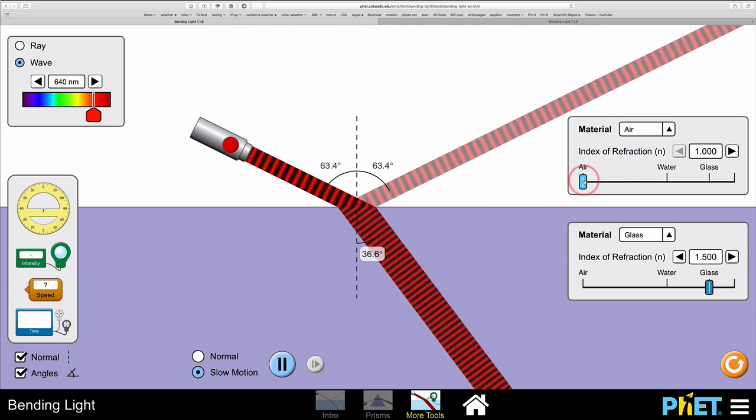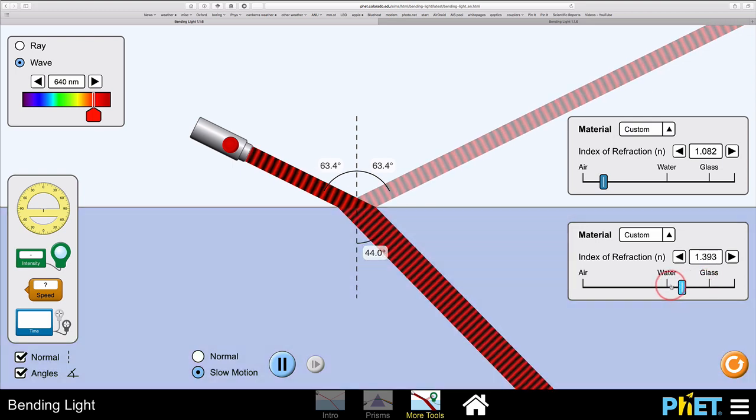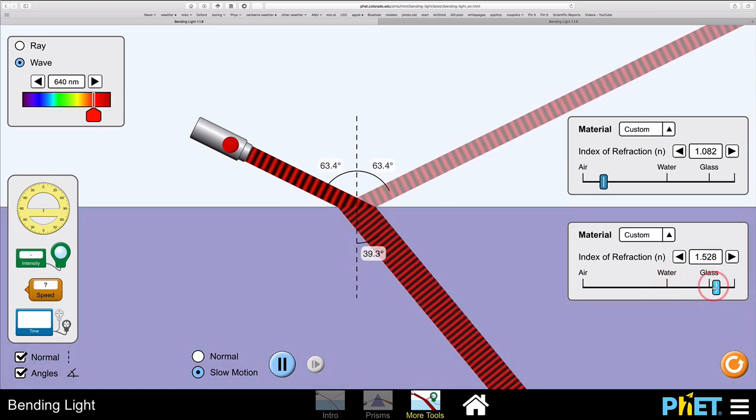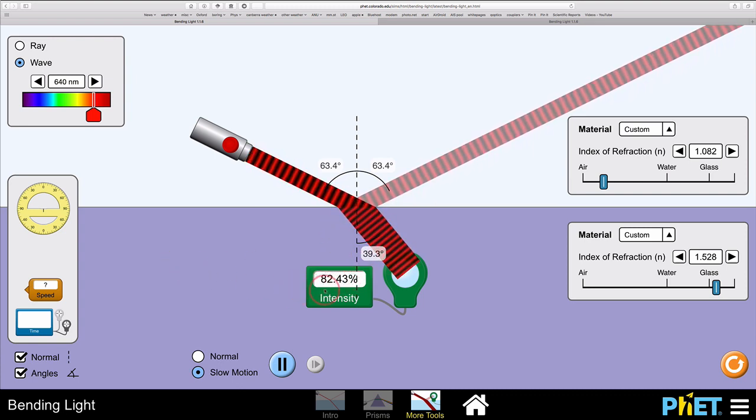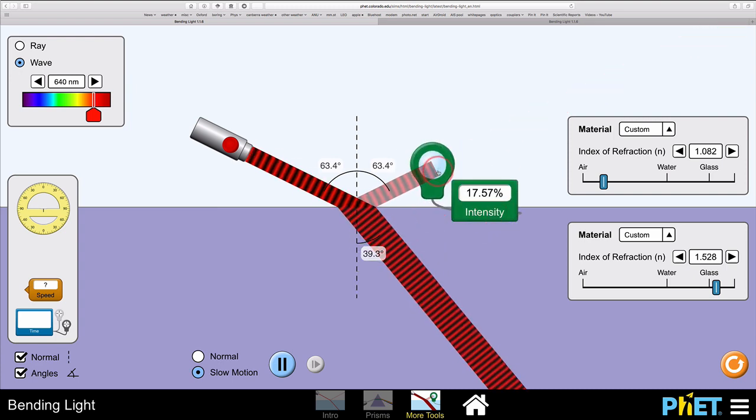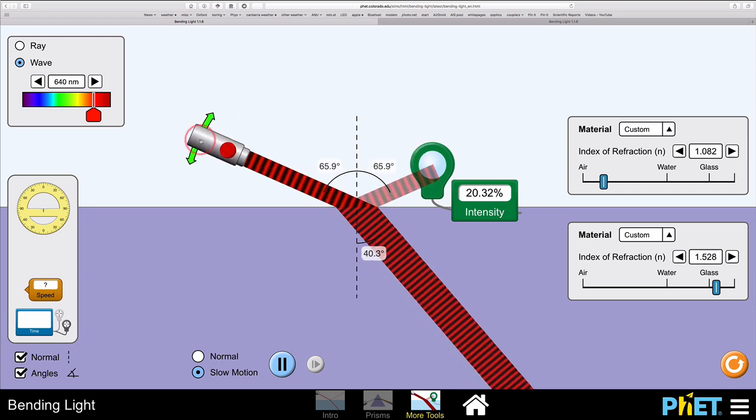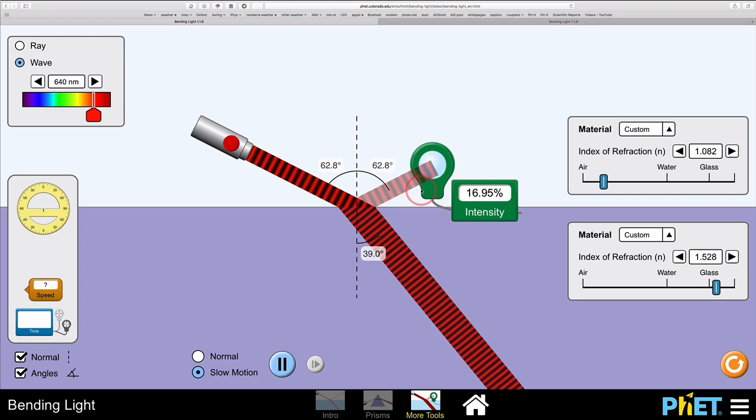We can change the refractive index of the top layer here, n1, which changes the angle. Change the refractive index at the bottom down there. It's a nice little playground. We can also measure the intensity of the light. We see that in this case, 82.4% of the light is being transmitted and refracted. If we measure the light up here, we see the rest is being reflected. We can change the angle here, increase the amount of reflection like that.